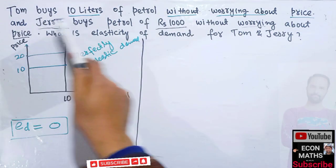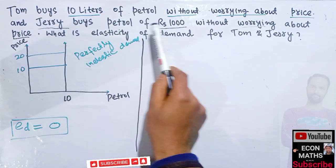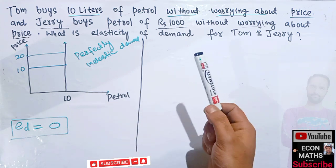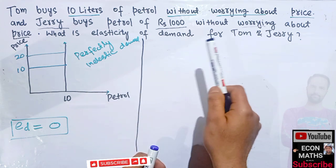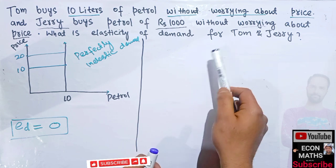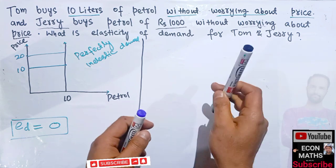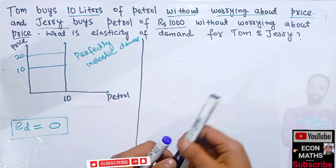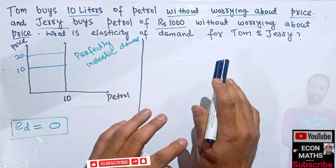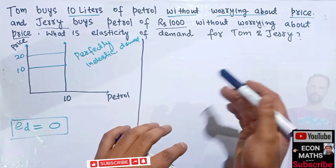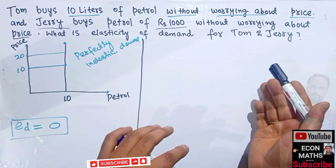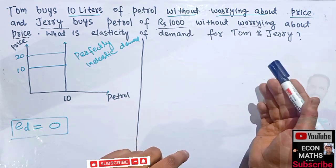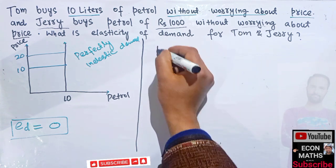Now the next part: Jerry buys petrol worth 1000 rupees without worrying about price. This means Jerry requires 1000 rupees worth of petrol irrespective of the quantity he can buy at a given price. In other words, his expenditure on petrol is fixed, which implies any change in price will not affect total expenditure.